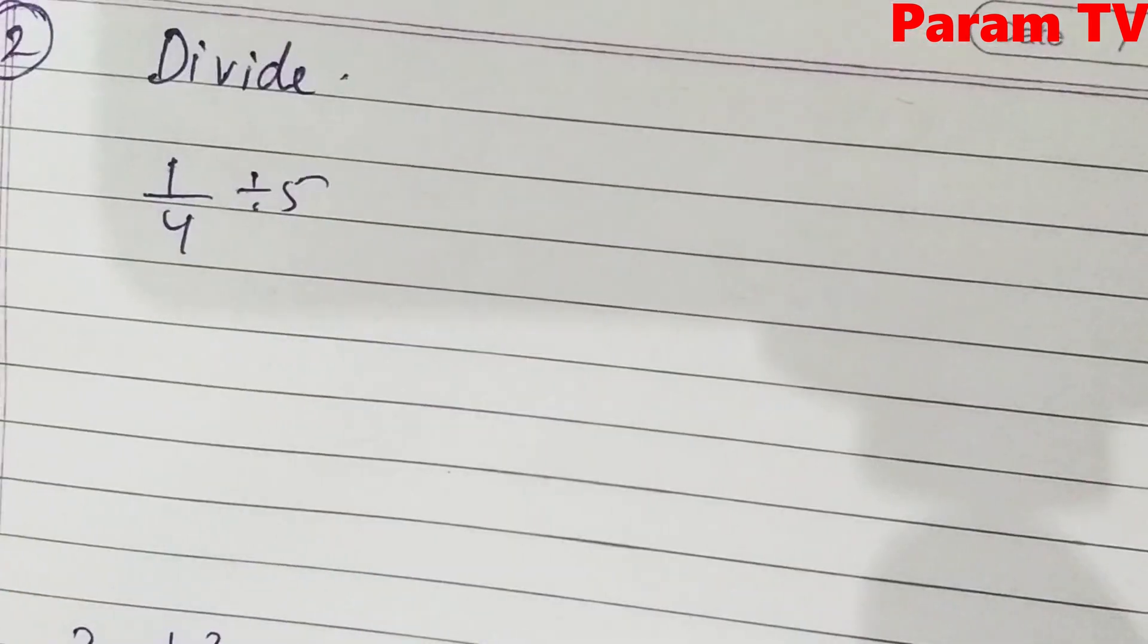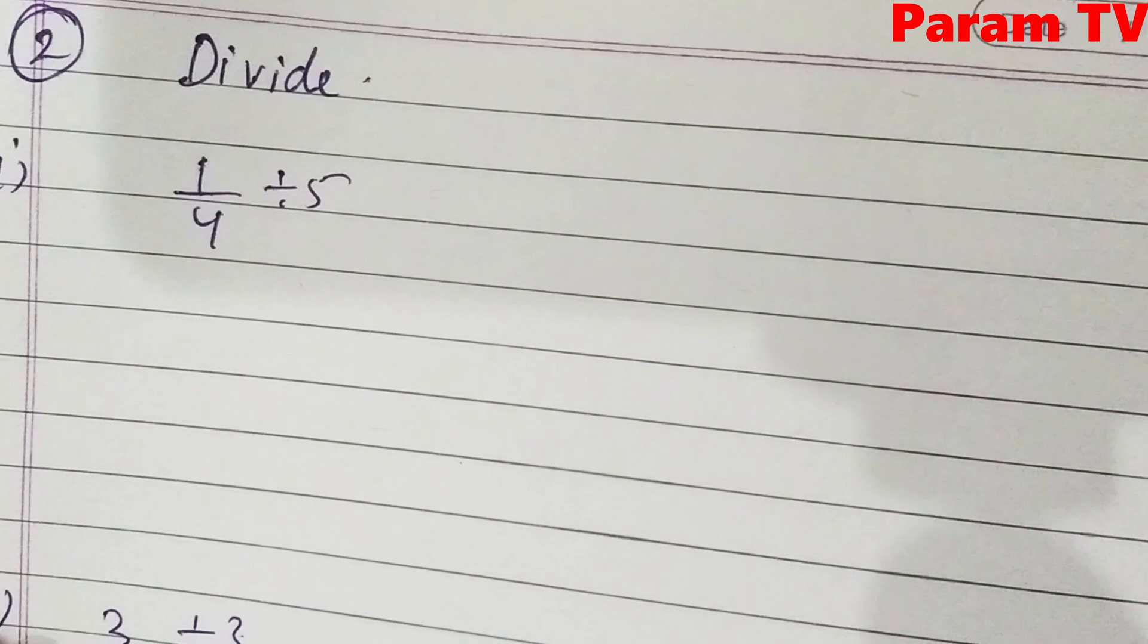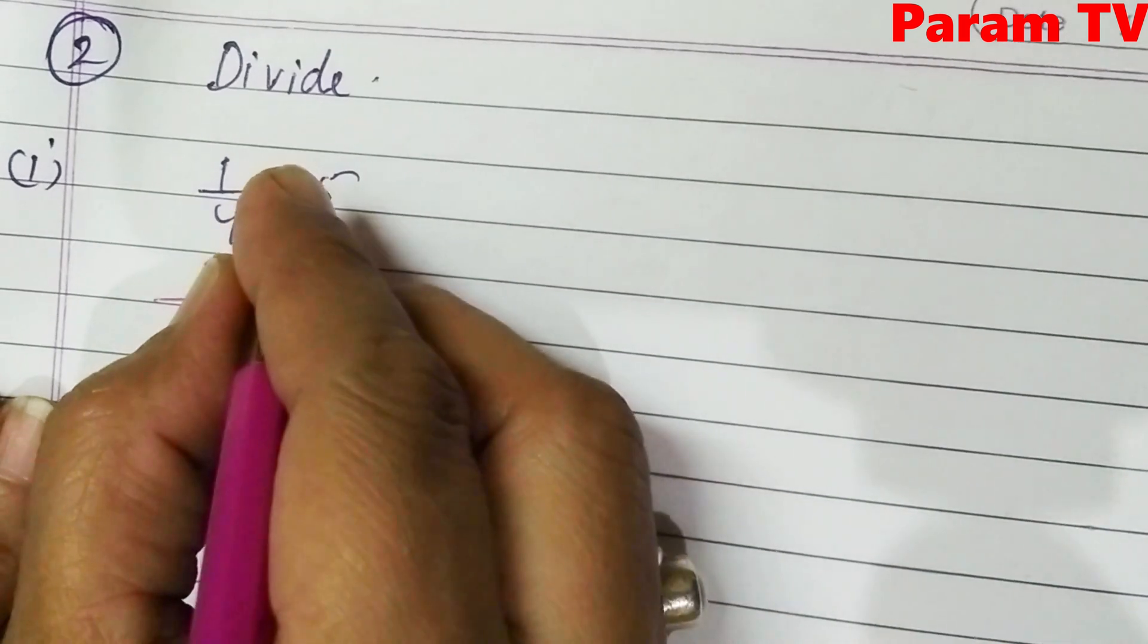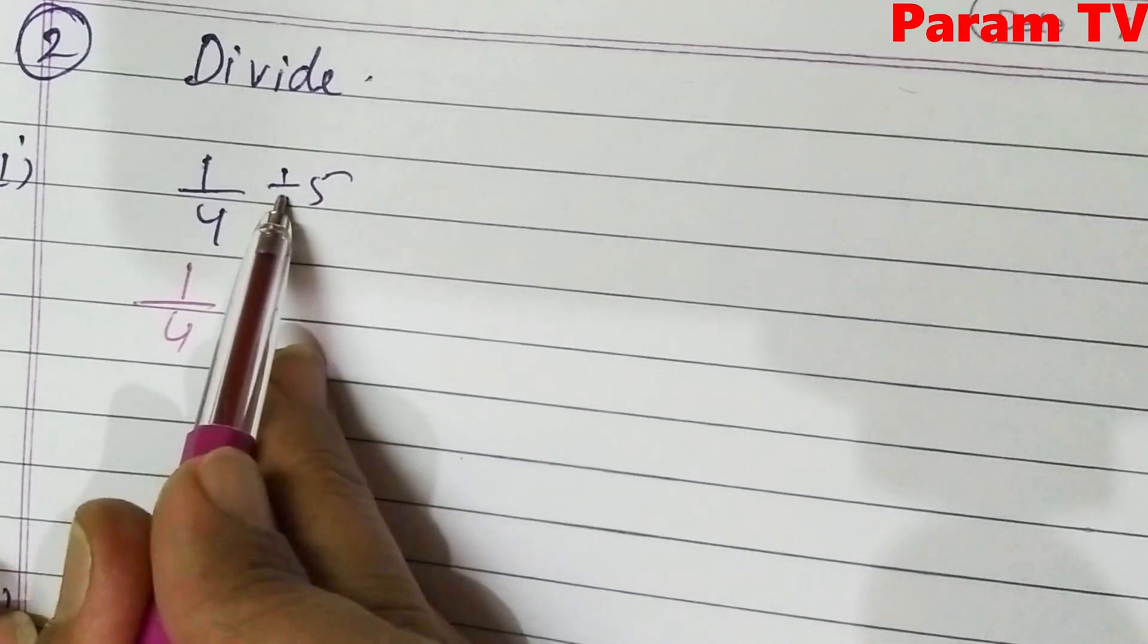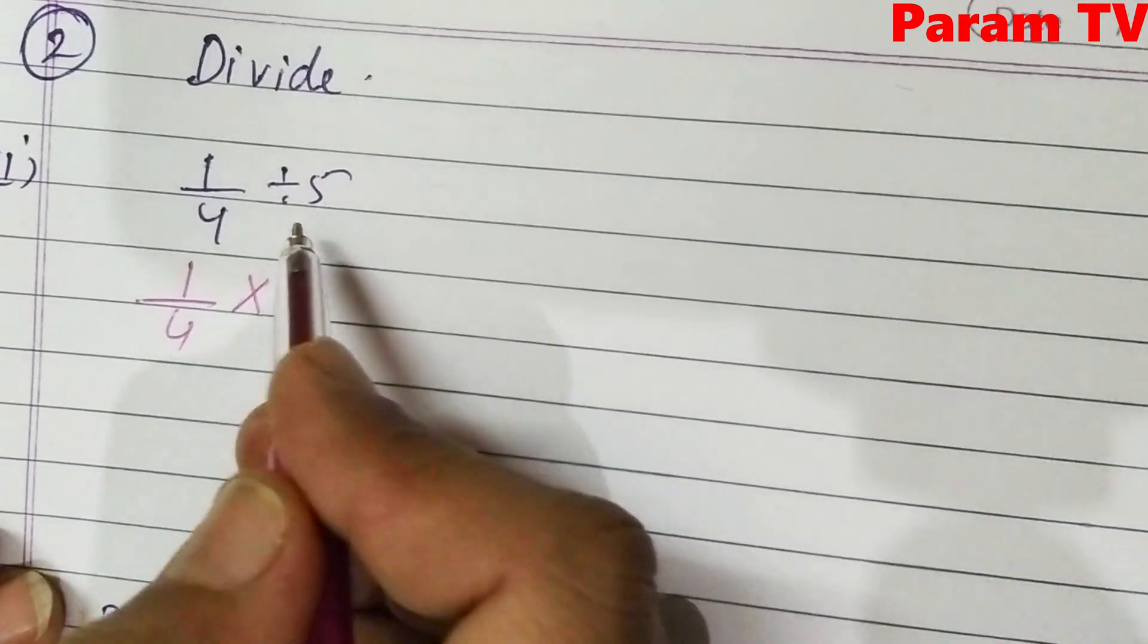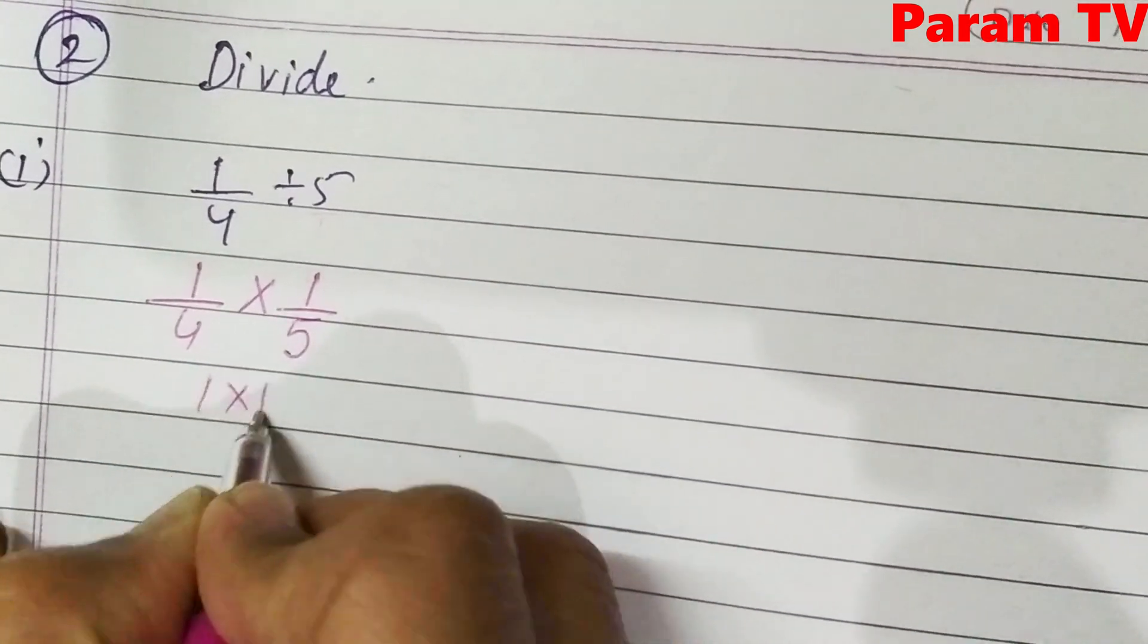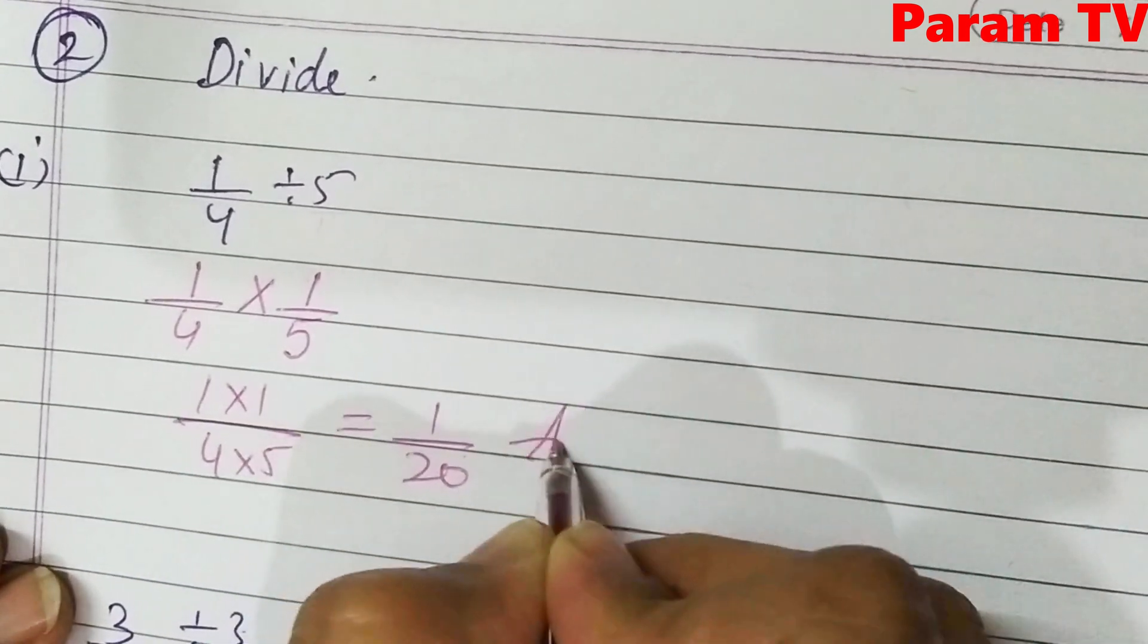Next is question number 2. It is divide. Students, divide is the only way to divide. First, you will change the divide into multiply. And the next term, which is the next term, we will reciprocal. Since there is no denominator, so it is over 1. So it will give 1 by 5. Now you can multiply them. 1 into 1 over 4 into 5. This is 1 by 20 answer.